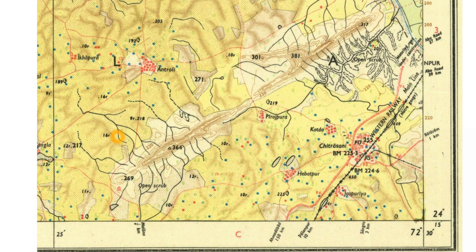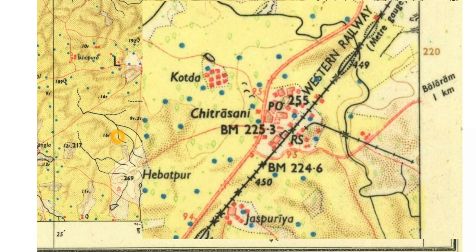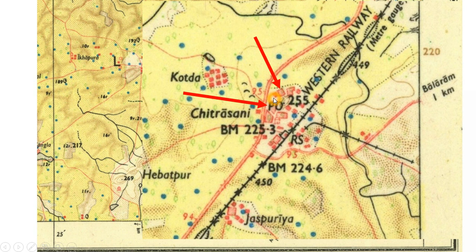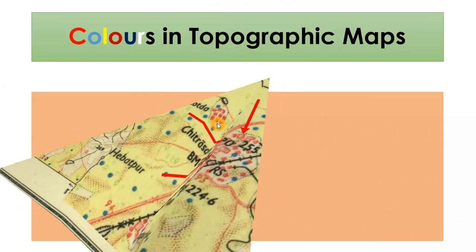Looking at another part of the map showing a comparatively developed village, we have a metal road under construction, a railway passing through it, and a railway station — making it a comparatively more developed small town. A number of buildings are shown in red, comparatively larger than huts, which could be factories or industries. A post office is marked 'PO,' and a temple symbol is also visible. All these man-made buildings are shown using red color.